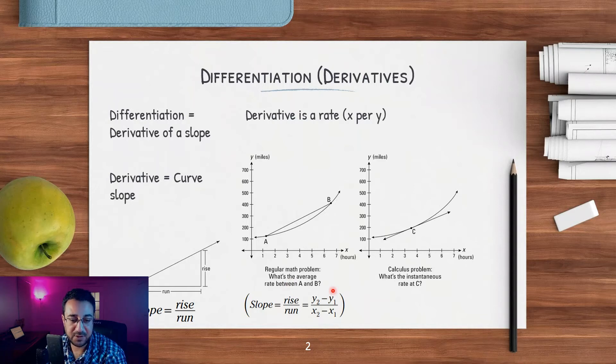And that represents the average rate between A and B in the units of miles per hour. But if you have the problem differently - you have miles on the y-axis and hours on the x-axis, and you have point C - as a calculus problem, it would say what is the instantaneous rate at C. So at point C, what was the miles per hour for that vehicle speed? In this case you want to use calculus to solve that problem.